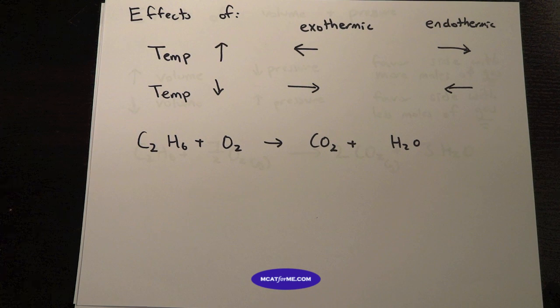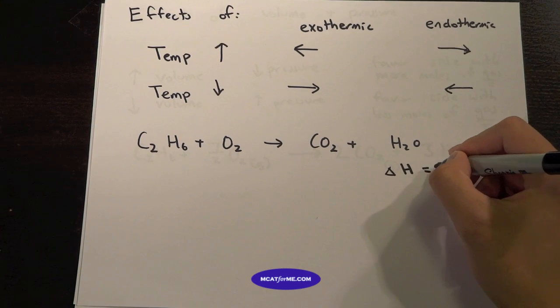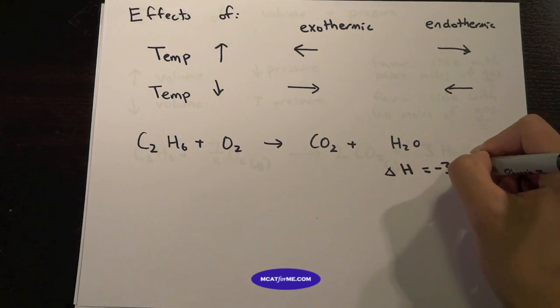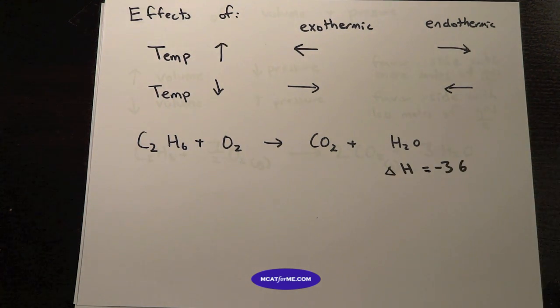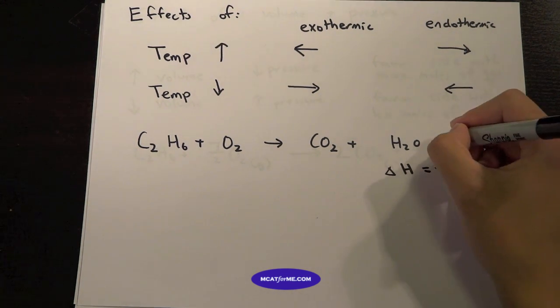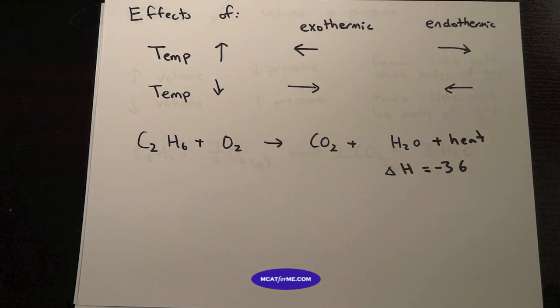And so now we're going to deal with temperature. So for temperature the one thing that we have to remember is that the delta H was negative 36. So if it's negative 36 that means it's exothermic. We would know that heat would be on the right side because it's negative meaning it's exothermic.